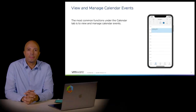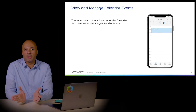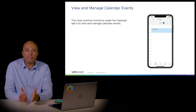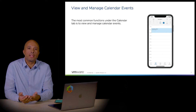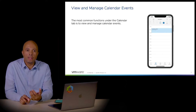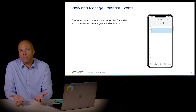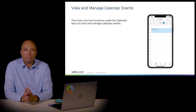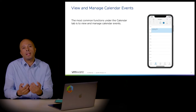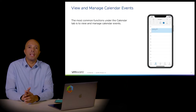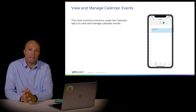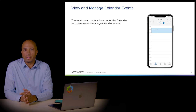View and manage calendar events — events are a huge deal with mobile devices when you're away from your desk. You need to be able to view your events, create new events, and access meeting information on the go. Within Workspace ONE Boxer you can do all those things, and it's easier to do it on this device than going back to a laptop, because you can do it from anywhere at any time.